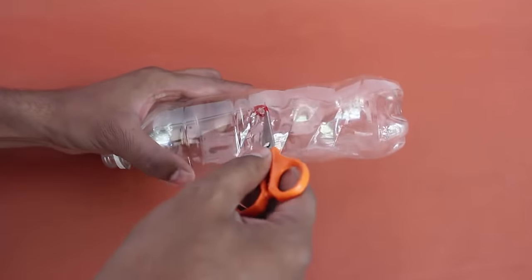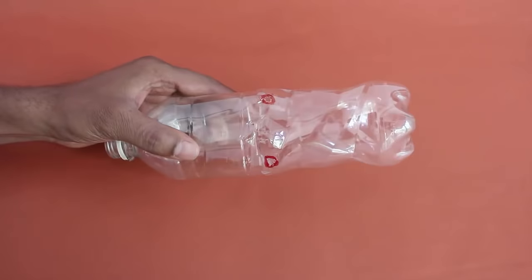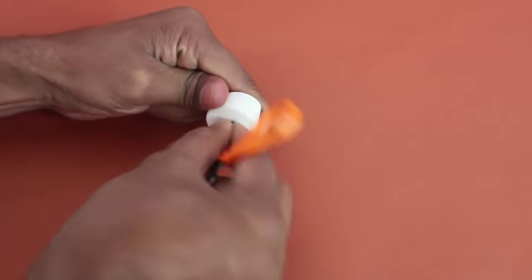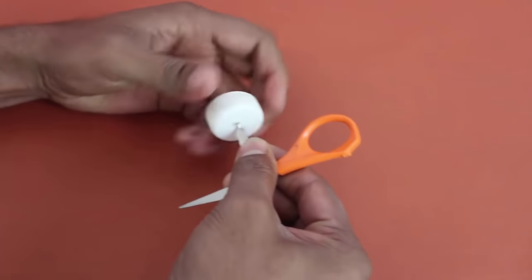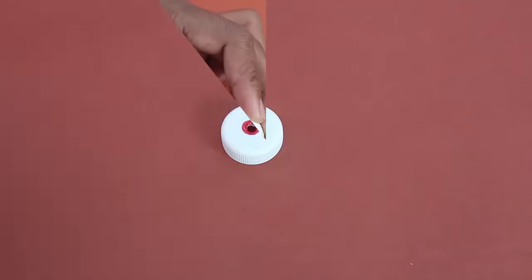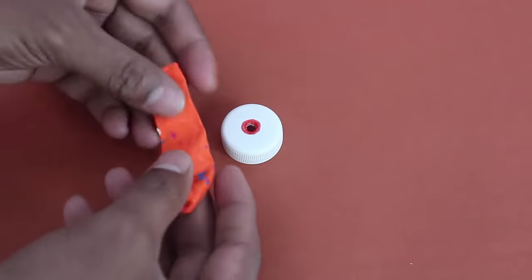First make two holes midway on the surface of the plastic bottle. The two holes are marked with red. Next make a small 5 millimeter diameter hole in the lid with the pointed end of the scissors.